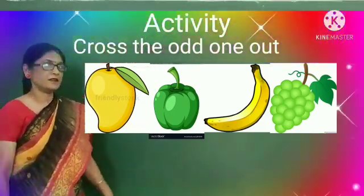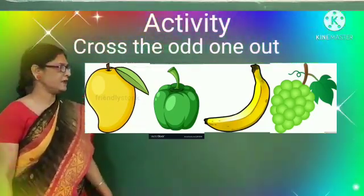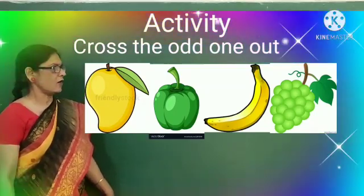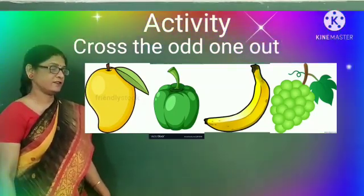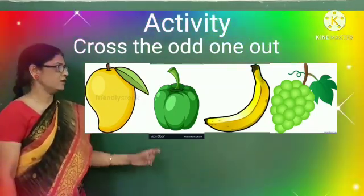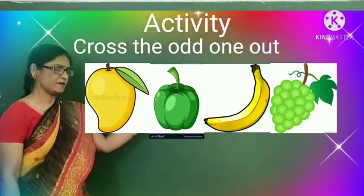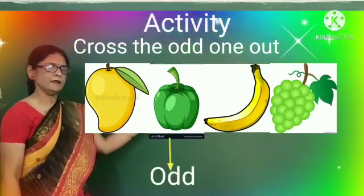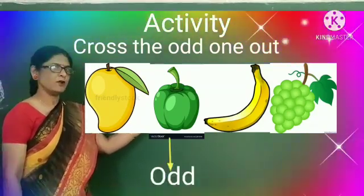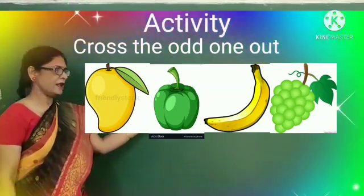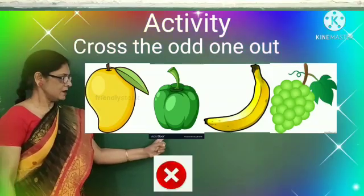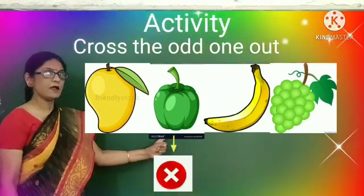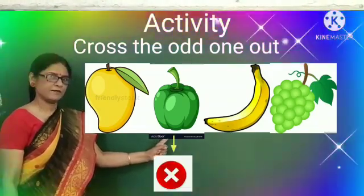And children, can you tell me which is odd in this group? Yes children, very good. Capsicum is odd in this group. So children, we will put a cross below the capsicum.